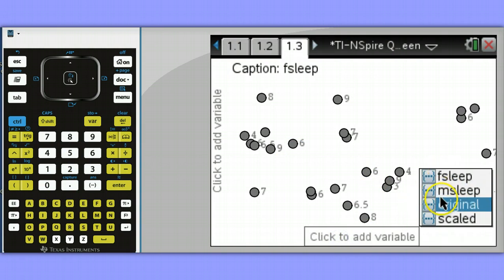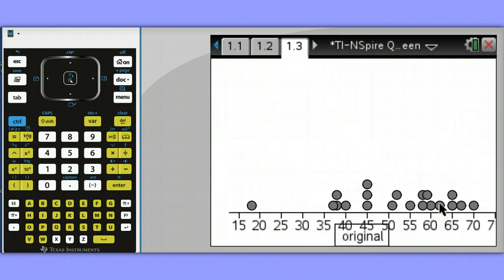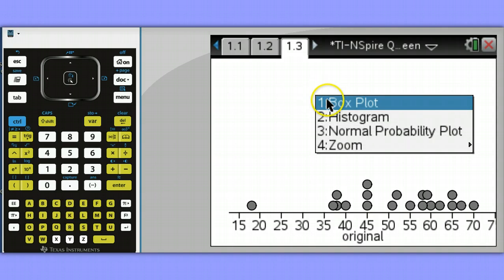Let's choose this data called original. These are some test scores. Here we have a dot plot. Let's change this to a box plot. I'm going to right click and say box plot.